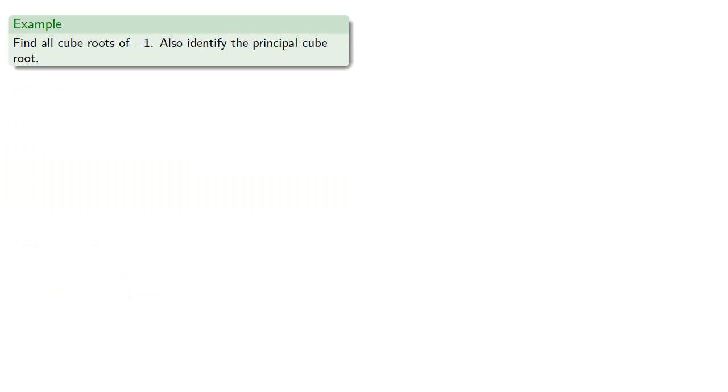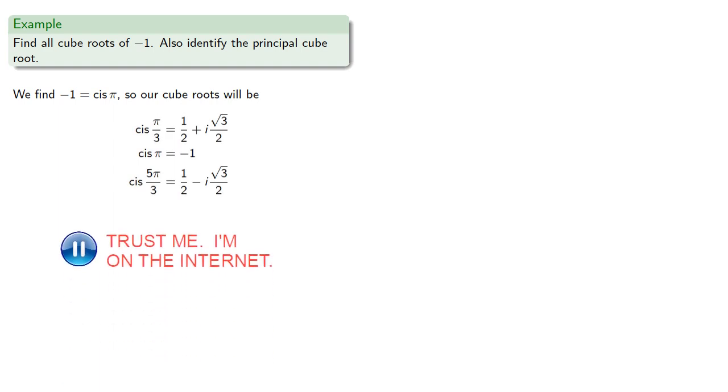To see why, let's try to find all cube roots of -1, and identify the principal cube root. We find that -1 is cis π, so our cube roots will be...